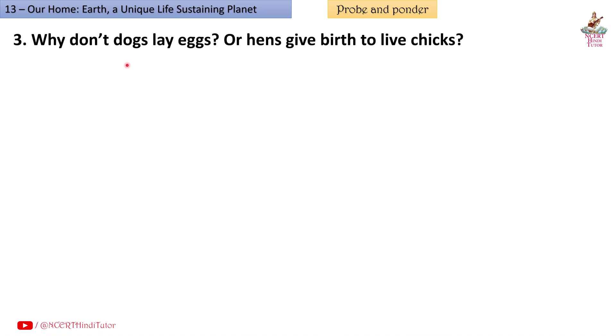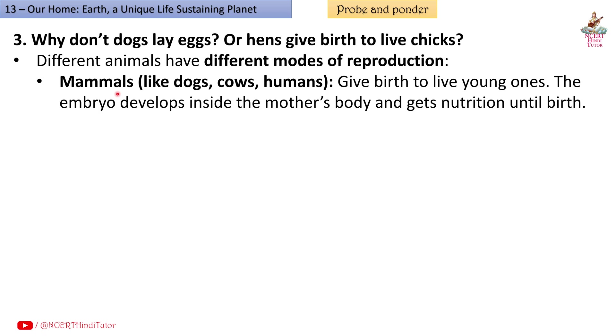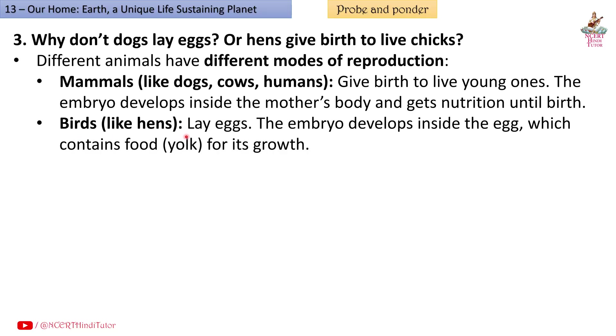Question 3: Why don't dogs lay eggs or hens give birth to live chicks? Answer: Different animals have different modes of reproduction. Mammals like dogs, cows, humans give birth to live young ones. The embryo develops inside the mother's body and gets nutrition until birth. Birds like hens lay eggs. The embryo develops inside the egg which contains food, yolk, for its growth. Each group of animals has adapted to its own reproductive strategy for survival.